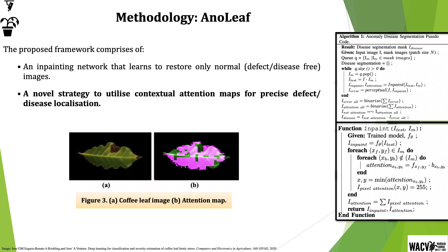The activation maps represent long-term correlation between distant contextual information and the missing regions based on high-dimensional features. Considering that our inpainting network has learned only to restore the healthy leaf counterparts, an attention map highlights the regions not utilized for inpainting and reinforces the inpainting error to effectively localize the disease.